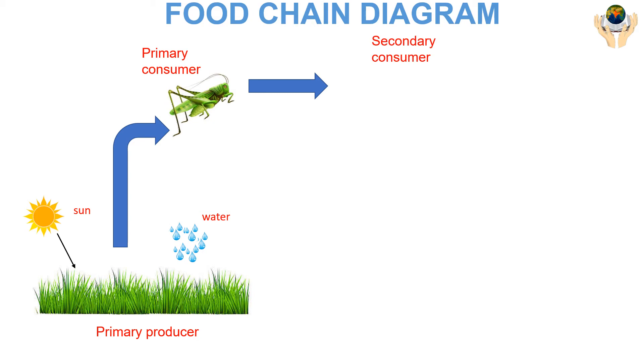The organisms that eat the primary consumers are called secondary consumers. Secondary consumers are generally meat eaters, or carnivores.